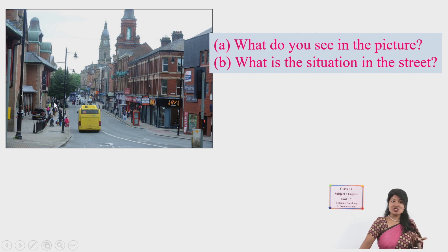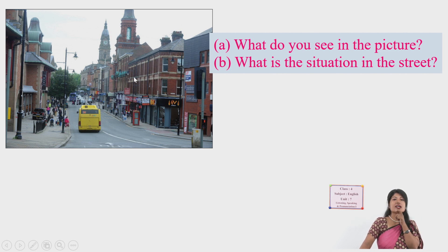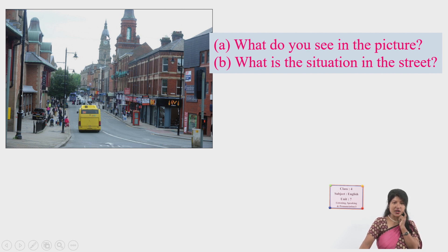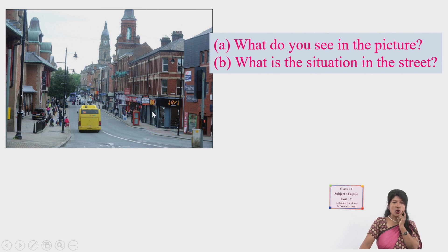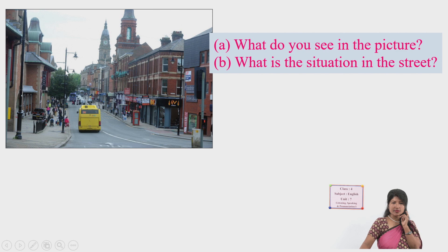We can also see a tree, a street lamp, a clock tower, another tower, streets, shops, and many buildings. These are the things we can see in this town picture.